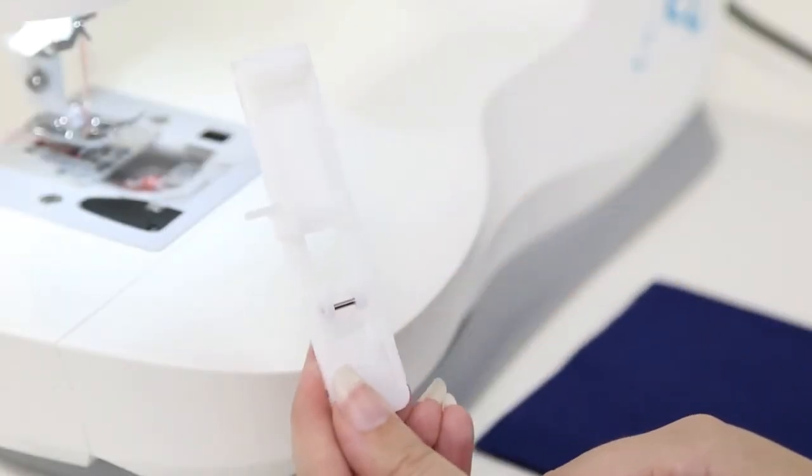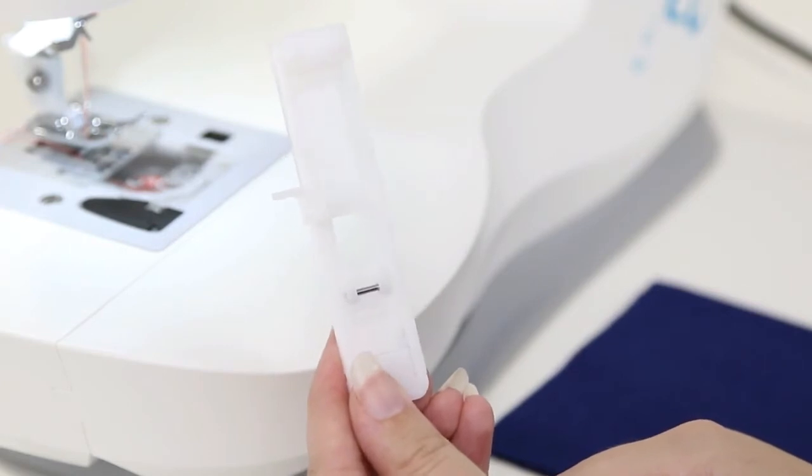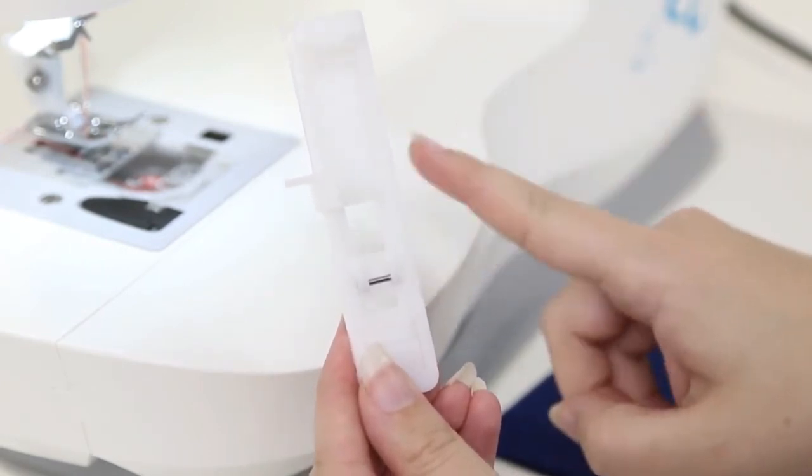To make a buttonhole, we need our one-step buttonhole foot. This accessory can be found in your removable storage compartment.